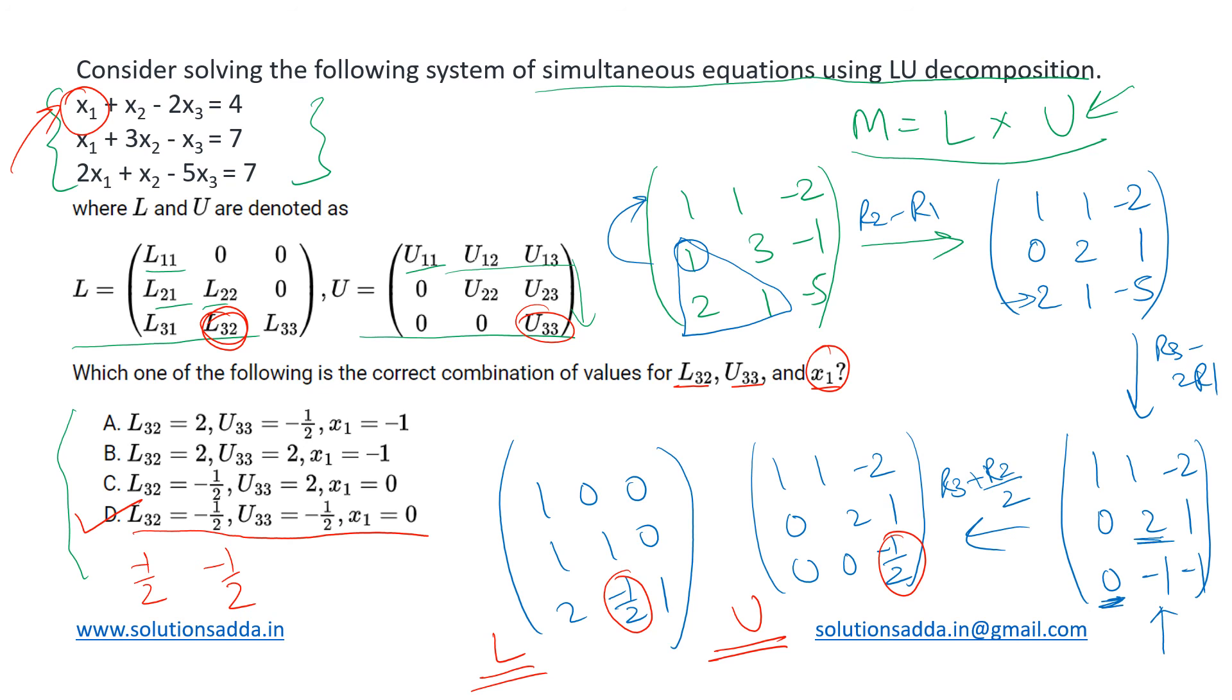And even if we go for evaluation now it will be simple. Since we have got the L and U decompositions, we can simply substitute the values and we will be able to find out that the value of x1 turns out to be 0. So using that, option D will be our answer.